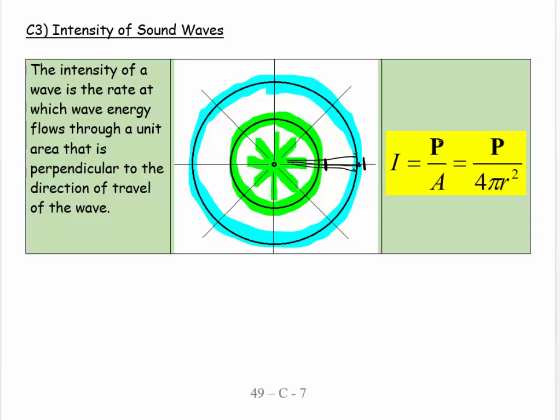We basically say what's the intensity? Well, the intensity is equal to the power—that's the energy per second—over the area. For a sphere, the area is going to be 4π times r squared, and so I end up with that equation.